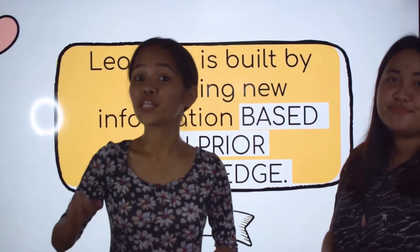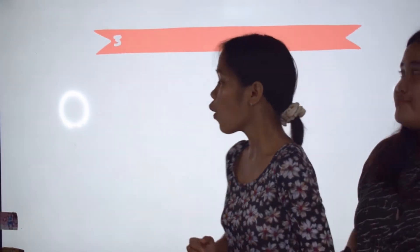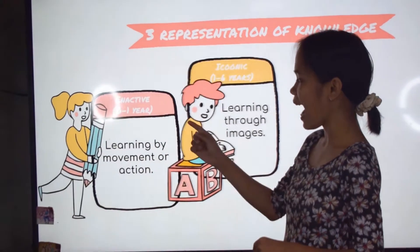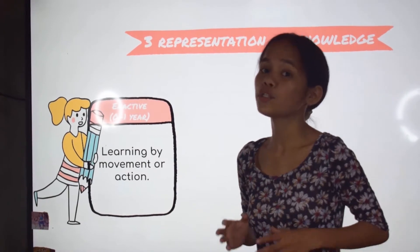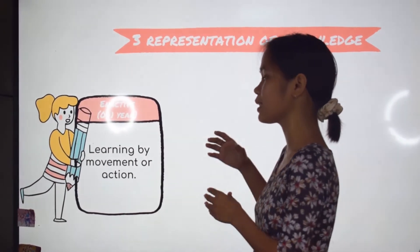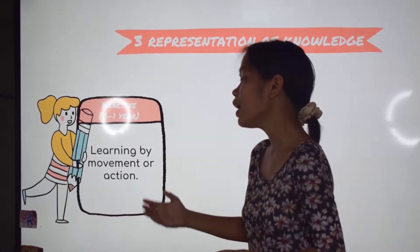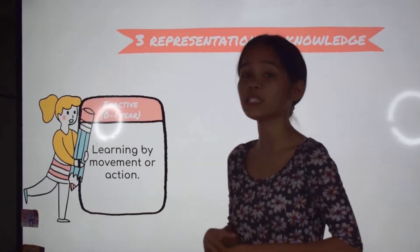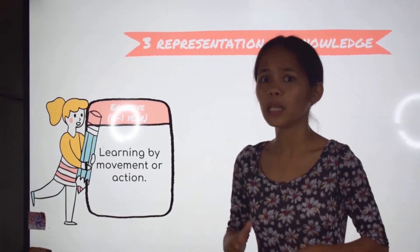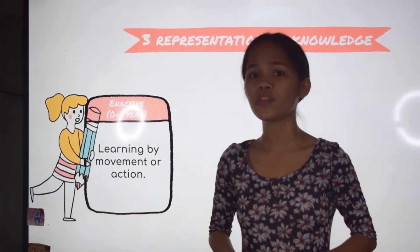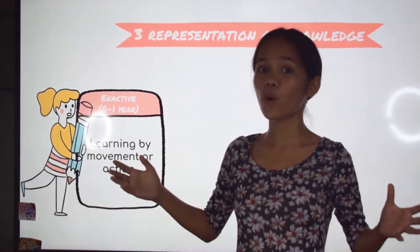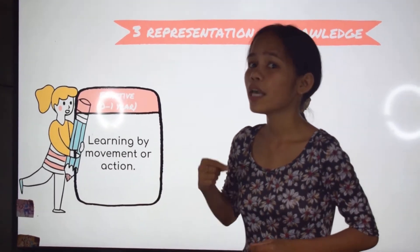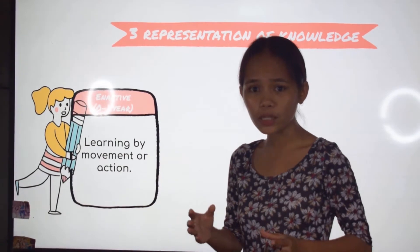He said that there are three representations of knowledge. First, we have the enactive. This mode happens at a very young age, from birth to one year old. This is learning represented by movement or action. For example, a child might show others that he knows how to float underwater without explaining it or drawing it.